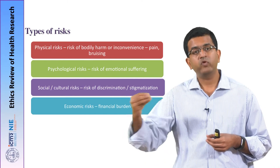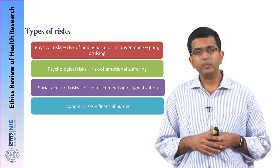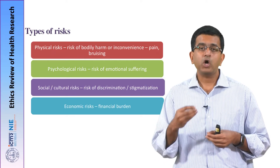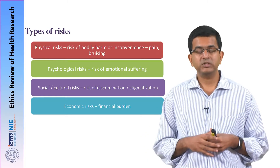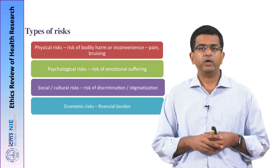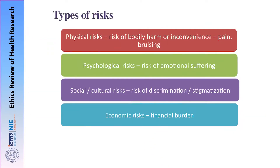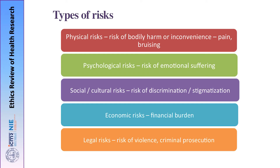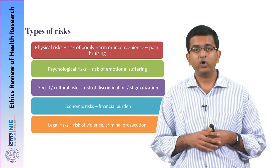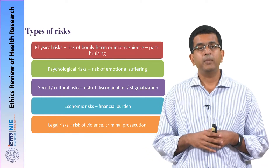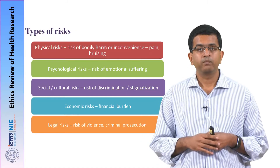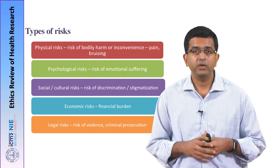This is the extreme form of economic risks. There can also be minor economic risks, such as the cost incurred in travelling to the research site — if it is not reimbursed, that can be a minor economic risk. Finally, there are also legal risks — risks of violence or criminal prosecution as part of being in a research project. For example, in a research project on HIV transmission among men who have sex with men, there could be a chance that legal aspects may be involved.